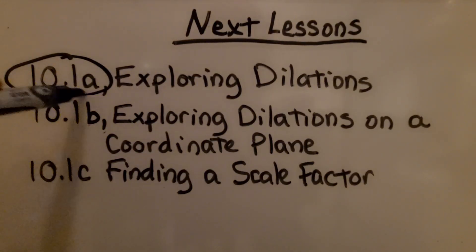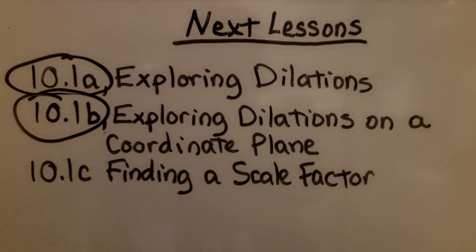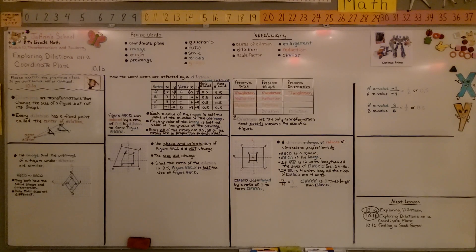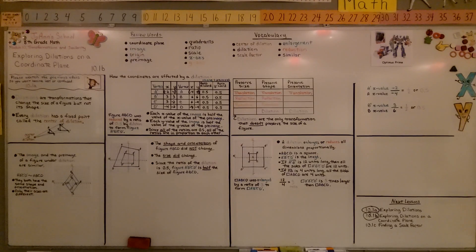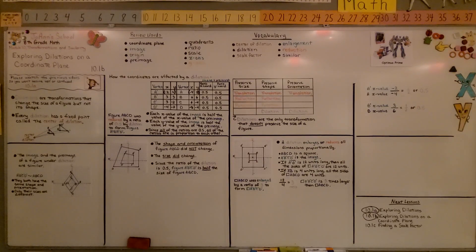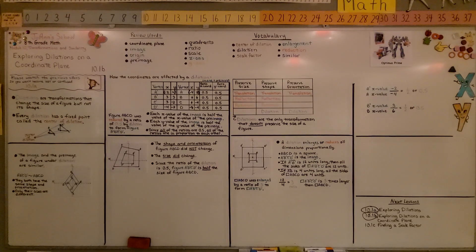We're finished with 10.1 B. We're moving on to C, the last part, finding a scale factor. When you get into high school geometry, you're going to review this plus learn a little bit more about dilations. I hope you have a wonderful day and join me for the last part of the lesson. Bye.